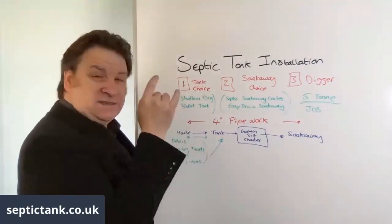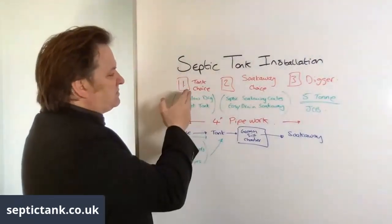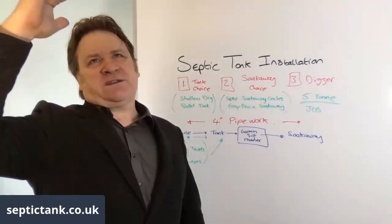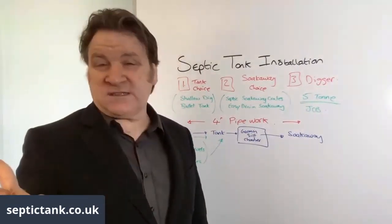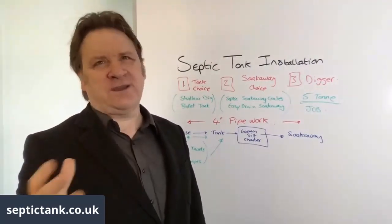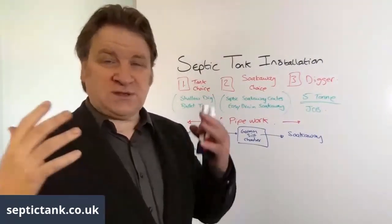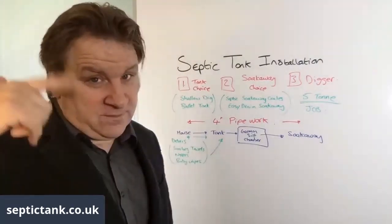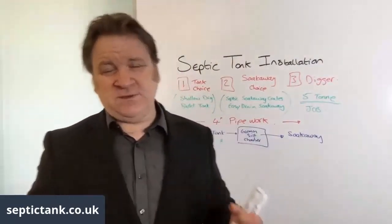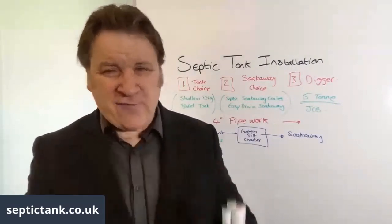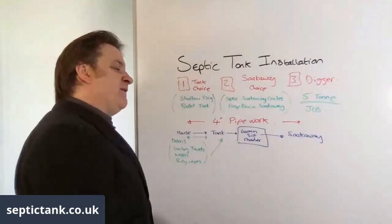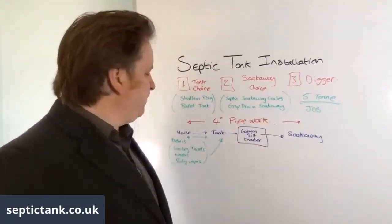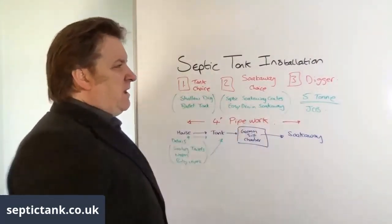So those are the basic necessities: tank choice - and before anything else, determine what is the depth of the outlet pipe. If it's three feet or more, it's going to be a hard job. If it's one to two feet, it'll be a nice job. If it's one foot to eighteen inches, it'll be a breeze. For soak away at one to two feet depth, easy drain or soak away crates every time. For an onion tank, use a JCB or five-ton digger minimum. Then your standard four-inch pipework and German silk chamber.